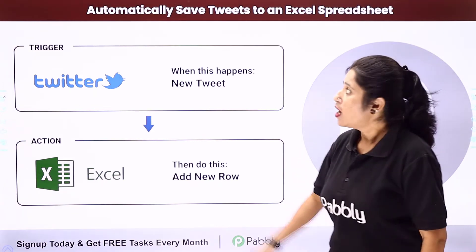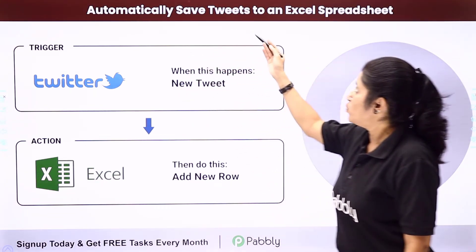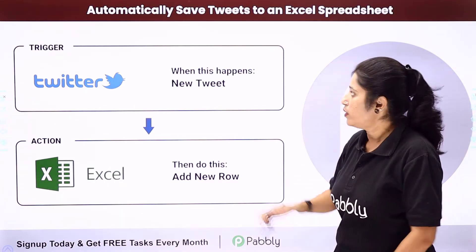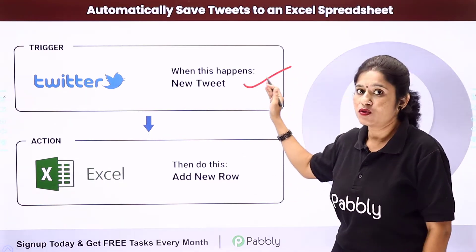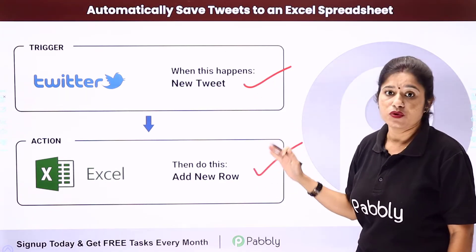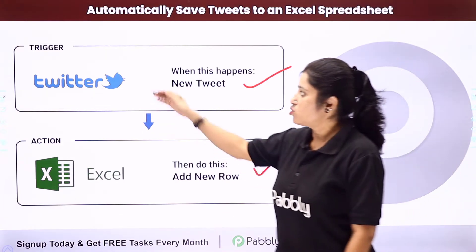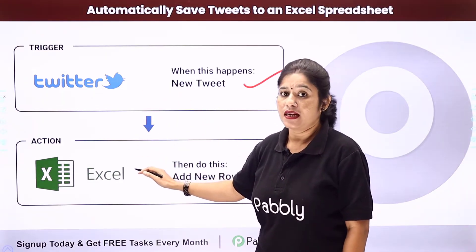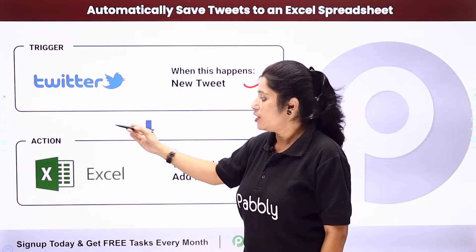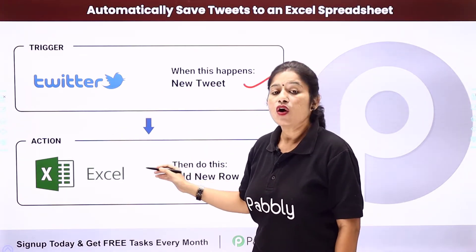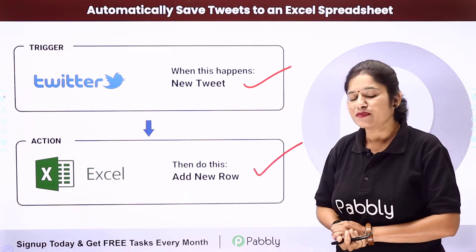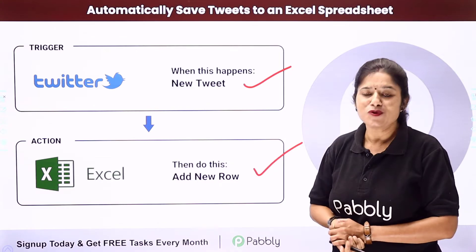In this video, we are going to learn how you can automatically save tweets to an Excel spreadsheet. The idea is that whenever you create a new tweet in your Twitter account, the tweet details should automatically be saved to your Excel spreadsheet as a new row. You need to integrate your Twitter account with Microsoft Excel using Pabbly Connect, where Twitter is the trigger application and Microsoft Excel is the action application.